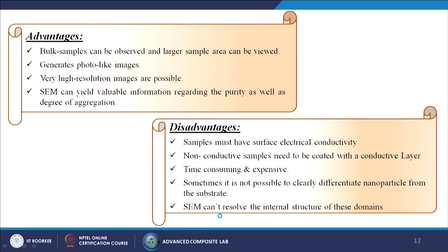Advantages of SEM: bulk samples can be observed, larger sample areas can be viewed, it generates photo-like images, very high resolution images are possible, and it can yield valuable information regarding purity and degree of aggregation. Disadvantages: samples must have surface electrical conductivity; non-conductive samples need to be coated with a conductive layer; it is time-consuming and expensive; sometimes it is not possible to clearly differentiate nanoparticles from the substrate; and SEM cannot resolve the internal structure of domains.